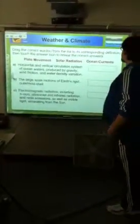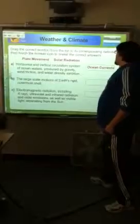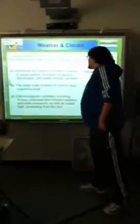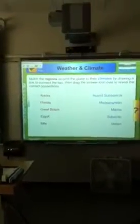Don't go anywhere. We've got three more questions. Why do you keep picking on me, Mr. Blizzard? Because you're such an awesome student. Horizontal and vertical circulation systems of ocean water produced by gravity, wind friction, and water density variation would be. Okay, the large-scale motion of Earth's rigid outermost shell. Why don't you go ahead and read to the class what solar radiation is. Electromagnetic radiation including x-rays, ultraviolet, infrared radiation, and radio emissions, as well as visible light emanating from the sun. Good job.